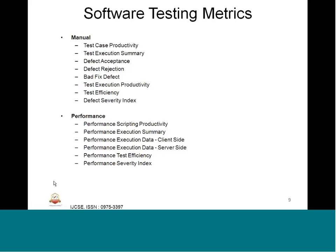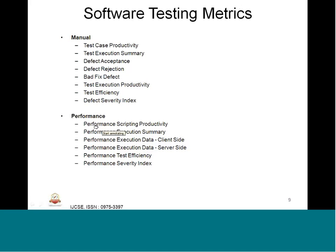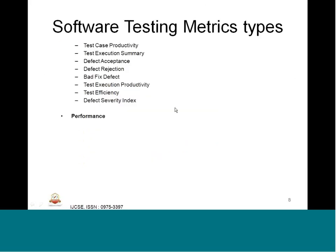Performance testing matrix includes performance scripting productivity, performance execution summary, performance execution data for host side and server side (analogous to target in embedded), testing efficiency of performance testing, and performance severity index. All performance type testing metrics must be captured separately using the testing matrix guidelines.